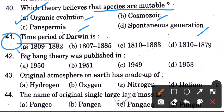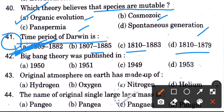Time period of Darwin — options are 1809 to 1882, 1807 to 1885, 1810 to 1883, 1810 to 1879. The answer is 1809 to 1882.